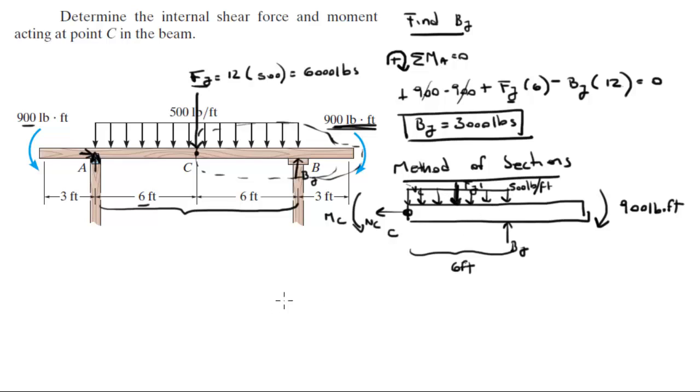So that being said, I'm going to redraw this section right here with replacing the distributed load by another force. Let's call it FY'. So I'm going to redraw this section except that now I just replaced the distributed load by a force FY', and there's a BY here. And there is a moment right here of 900 pound-feet. BY we found at 3,000 pounds. And FY' is equal to the area of this rectangle which has a length of 6 feet and a height of 500 pounds per foot, which means that FY' comes out to be 6 times 500 which is 3,000 pounds.